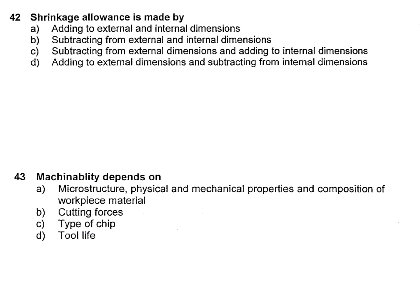Next question on shrinkage allowance. Shrinkage allowance is made by: A — adding to external and internal dimensions; B — subtracting from external and internal dimensions; C — adding to external dimension and subtracting from internal dimension; D — subtracting from external dimension and adding to internal dimension.